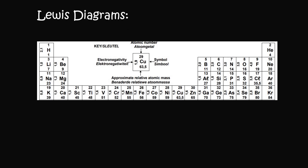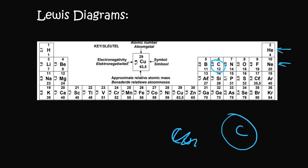For example, in earlier grades like grade 10, we would have looked at something like carbon. Carbon is in row number two, so it would have had two rows.